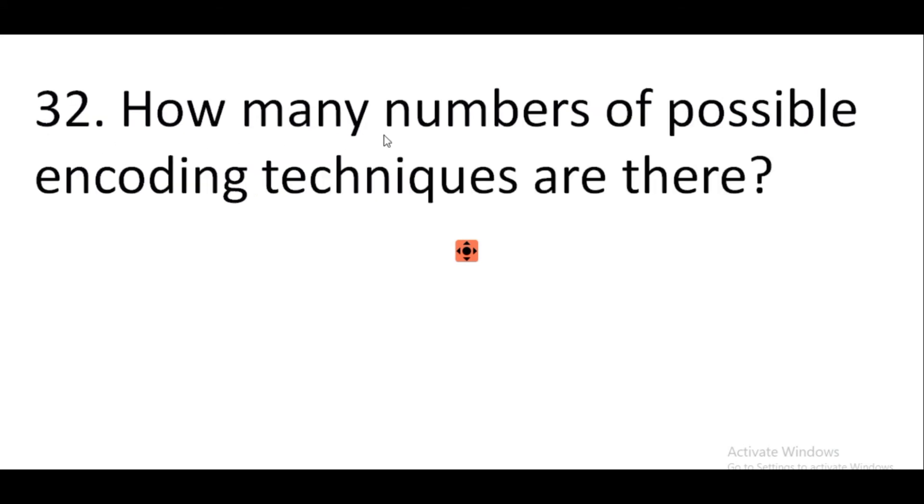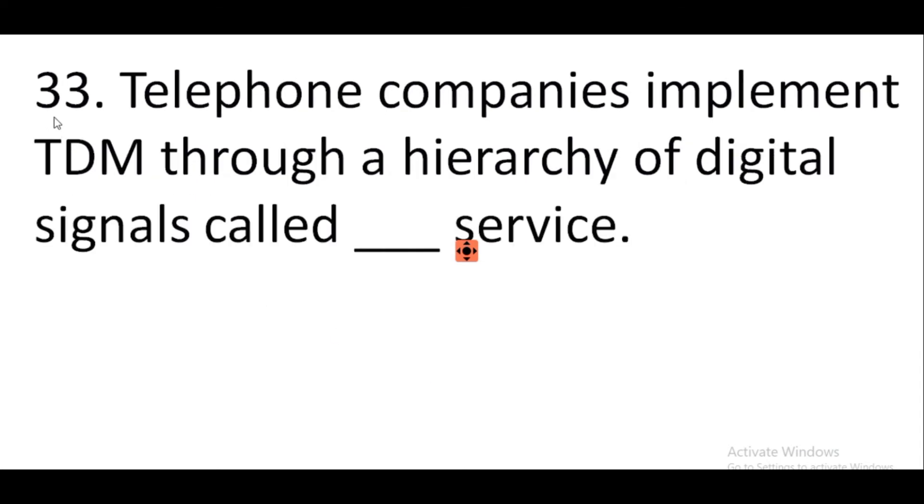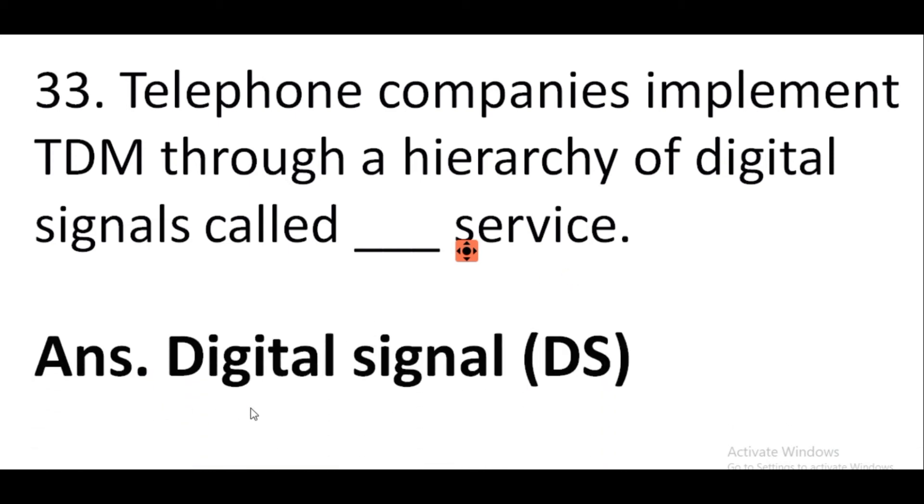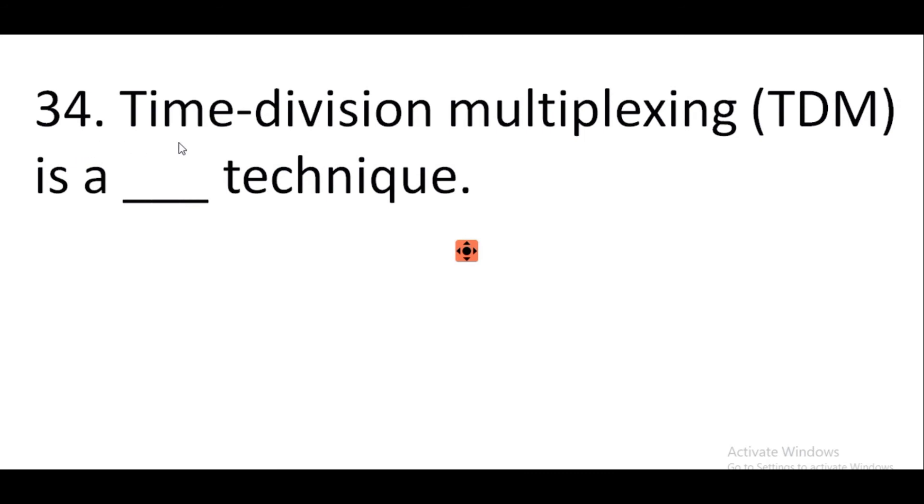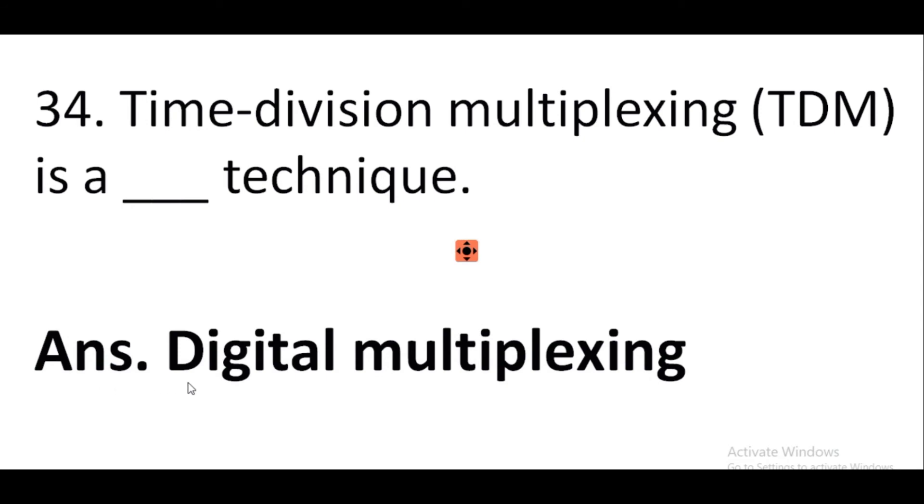Question number 32: How many numbers of possible encoding techniques are there? Answer: Four. Question number 33: Telephone companies implement TDM through a hierarchy of digital signals called digital signal service. Question number 34: The answer is digital multiplexing.